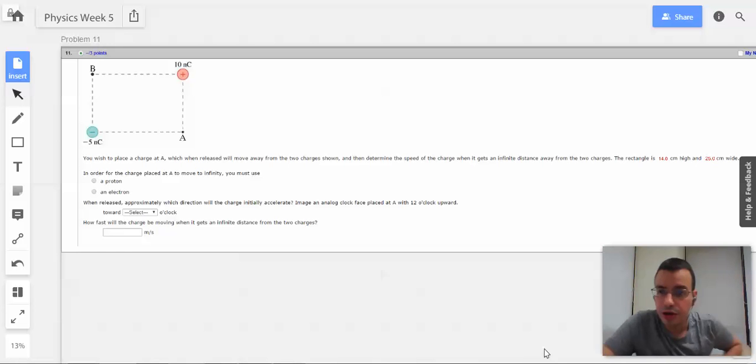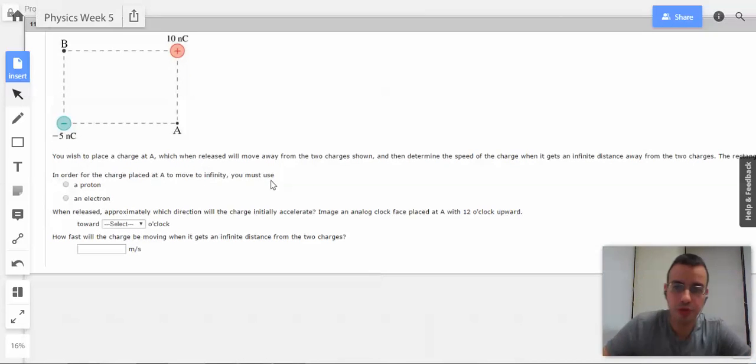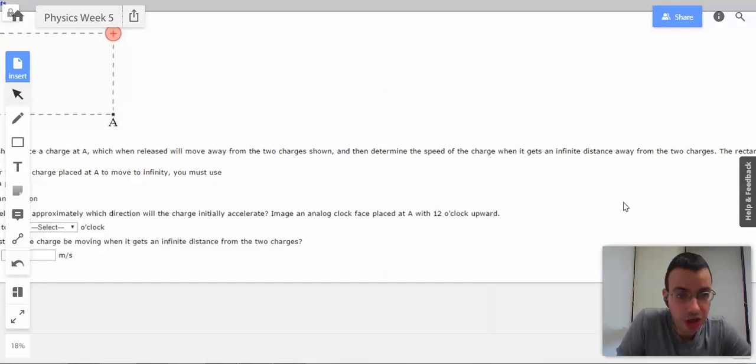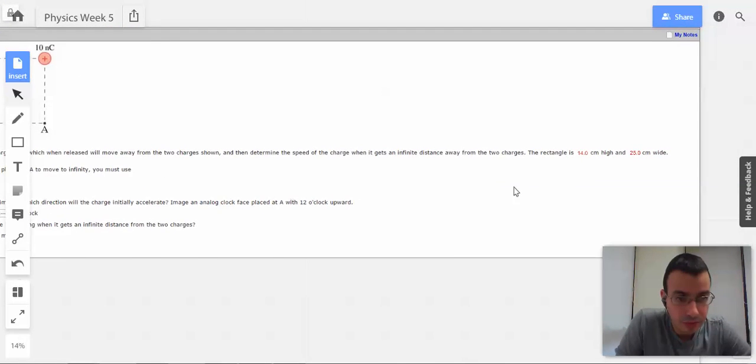Problem 11. You wish to place a charge at point A which when released will move away from the two charges as shown, and then determine the speed of the charge when it gets to infinity. The rectangle is 14 by 25 centimeters.